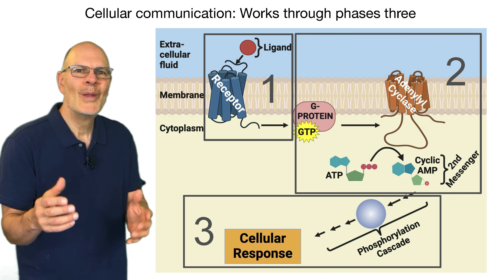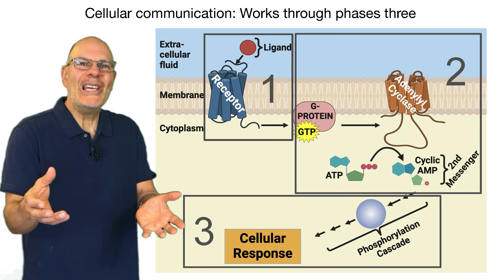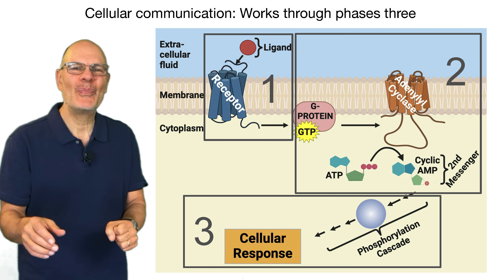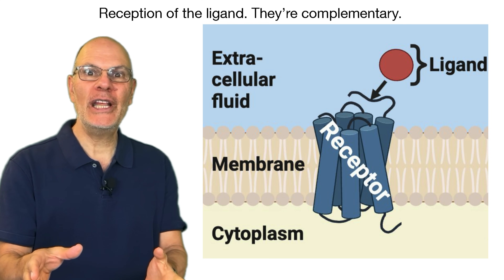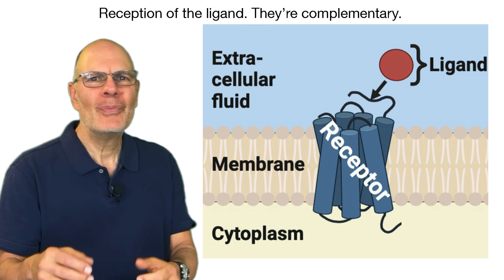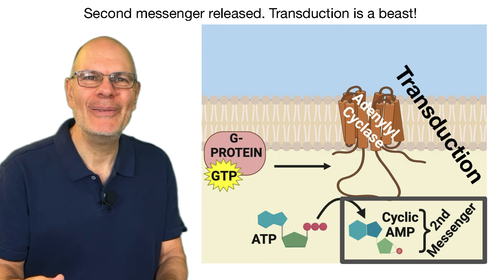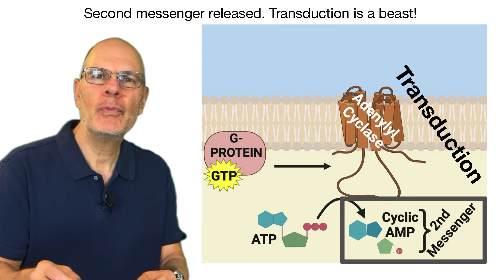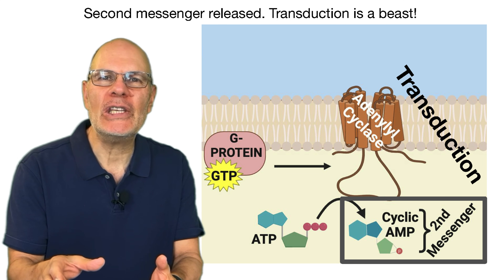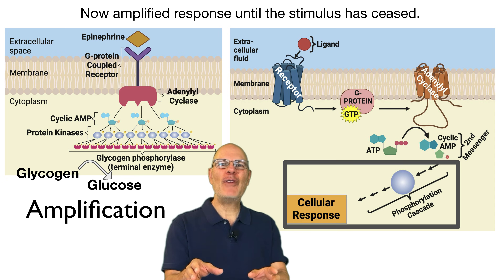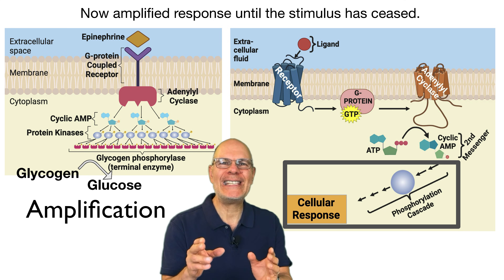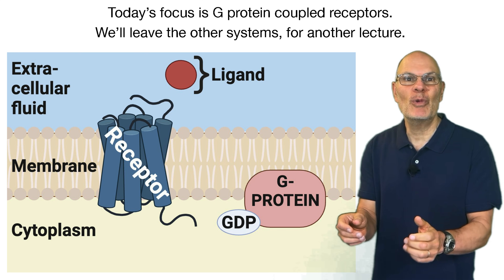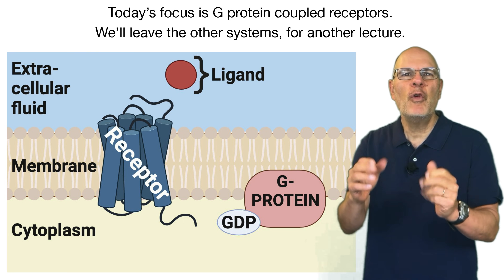We're learning about the process of cell communication. Cellular communication works through three phases: reception of the ligand at a complementary receptor, second messenger released, transduction, and then amplified response until the stimulus has ceased. Today's focus is G-protein coupled receptors — we'll leave the other systems for another lecture.